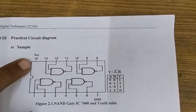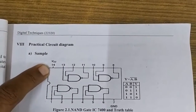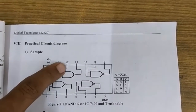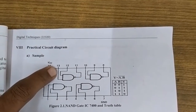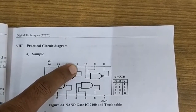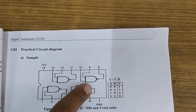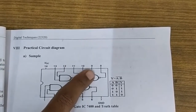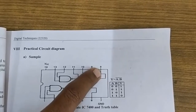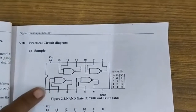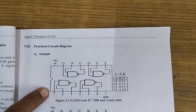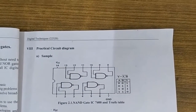Pin number 7 acts as ground and pin number 14 acts as VCC supply. For the third NAND gate, pin numbers 12 and 13 are the inputs and output is obtained on pin number 11. For the fourth NAND gate, inputs are applied on pin numbers 9 and 10 and output is obtained on pin number 8. This 14-pin IC comprises four different NAND gates.